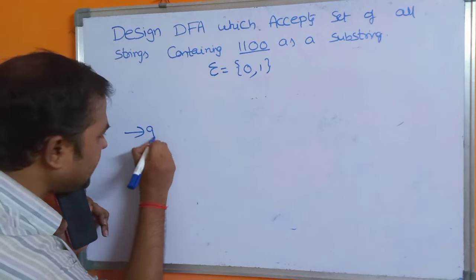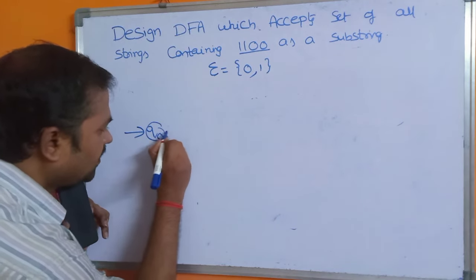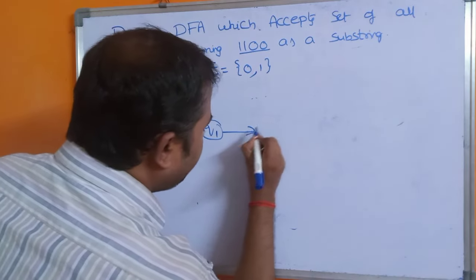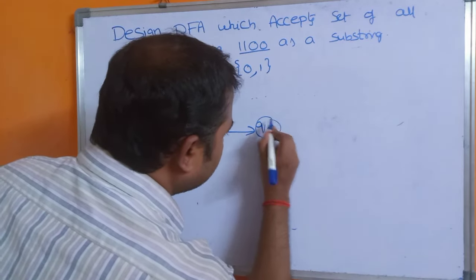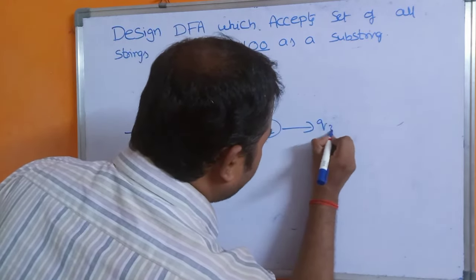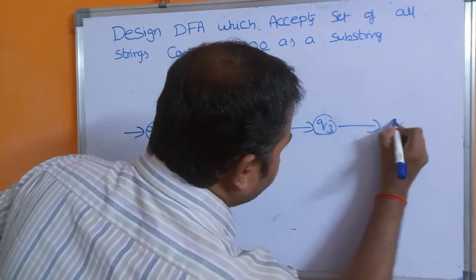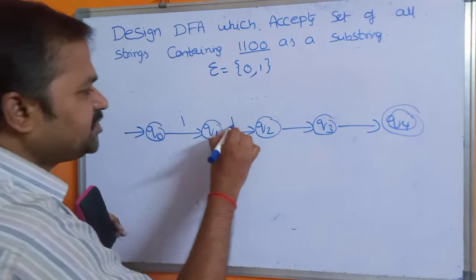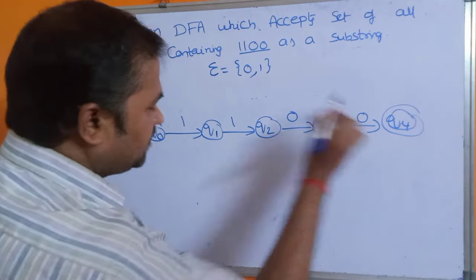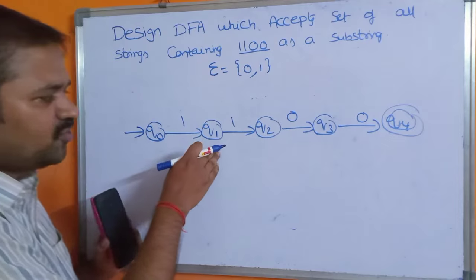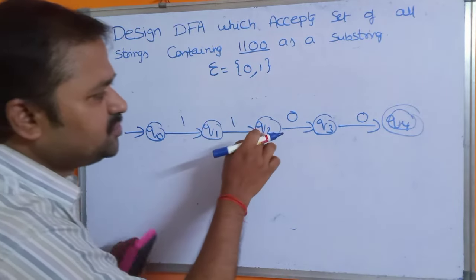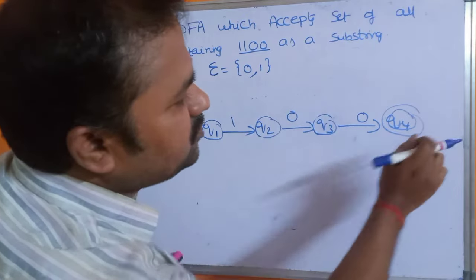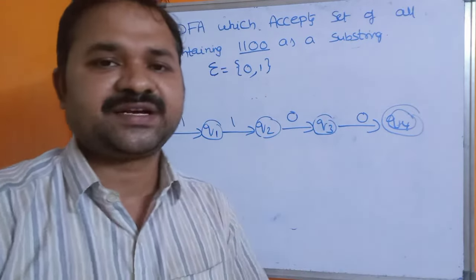The starting state is Q0. Next we have Q1, Q2, Q3, and Q4 is the final state. The substring is 1100. So, applying 1 on Q0 goes to Q1; 1 on Q1 goes to Q2; 0 on Q2 goes to Q3; 0 on Q3 goes to Q4. Q4 is the final state.